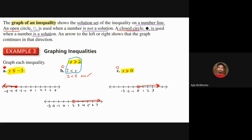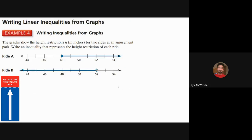We can also look at a graph and write the inequality it represents. For example, these graphs show height restrictions (H = height) for two rides at an amusement park, and we need to write an inequality representing the height restriction of each ride.